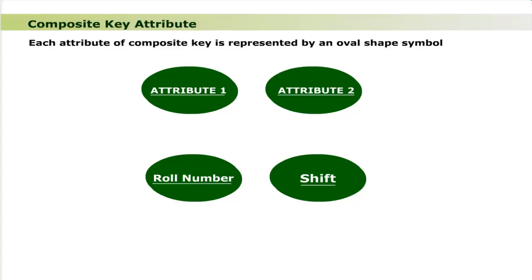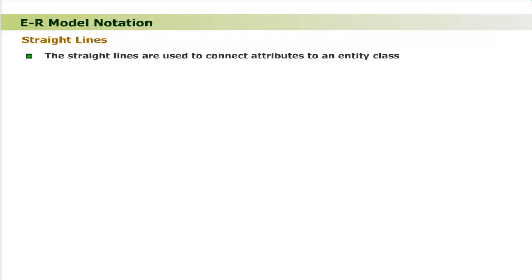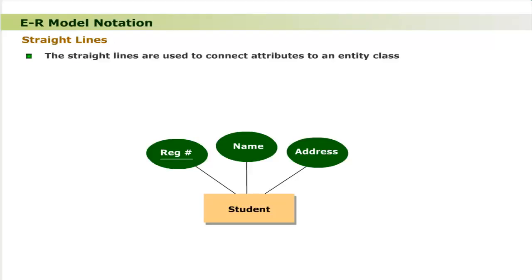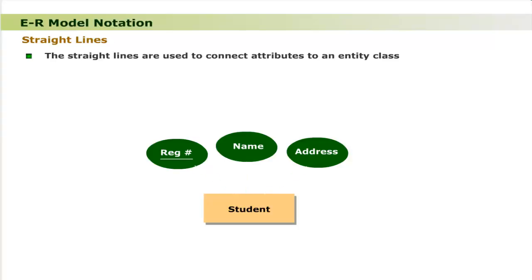After types of attribute representation, the next symbol of the ER model is straight lines. Recall that attributes are the defined properties of an entity class, meaning attributes are always associated with an entity class. Straight lines are used to connect attributes to an entity class. For example, the entity class Student has three attributes: registration number, name, and address, which are connected by straight lines.